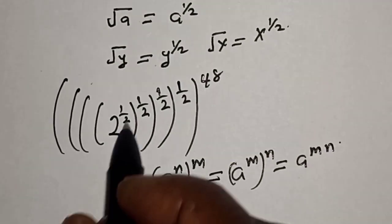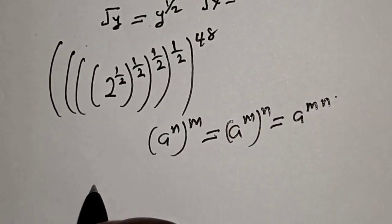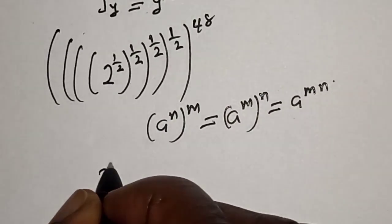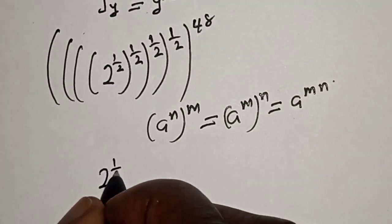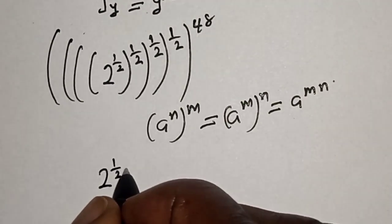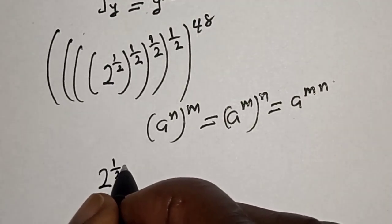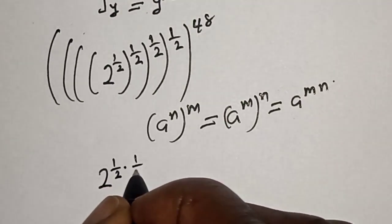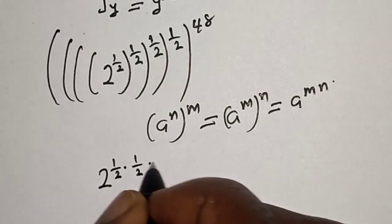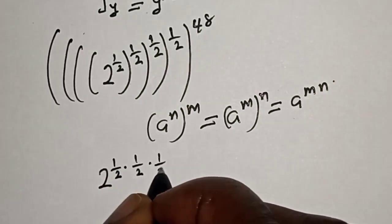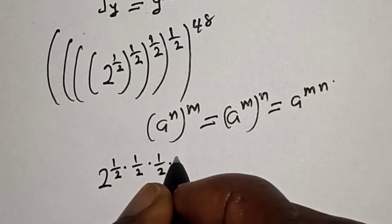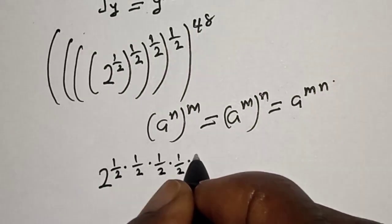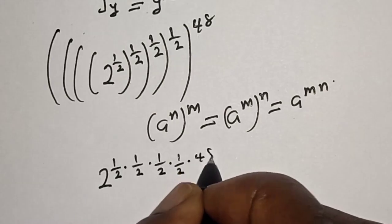Now this can be written as 2 raised to the power 1 over 2, multiplied by 1 over 2, multiplied by 1 over 2, multiplied by 1 over 2, multiplied by 48.